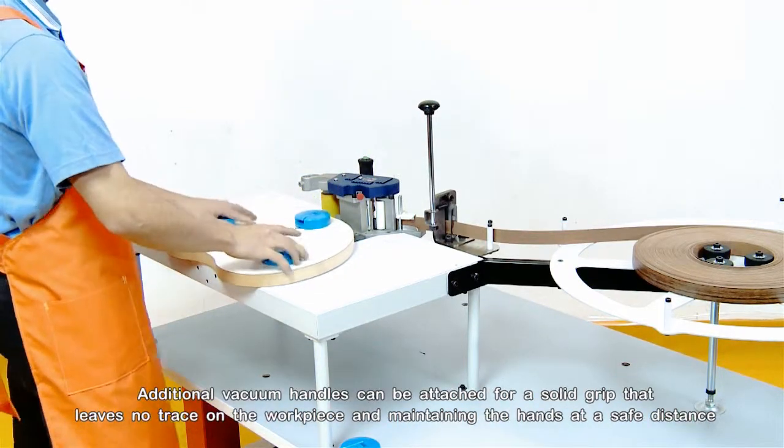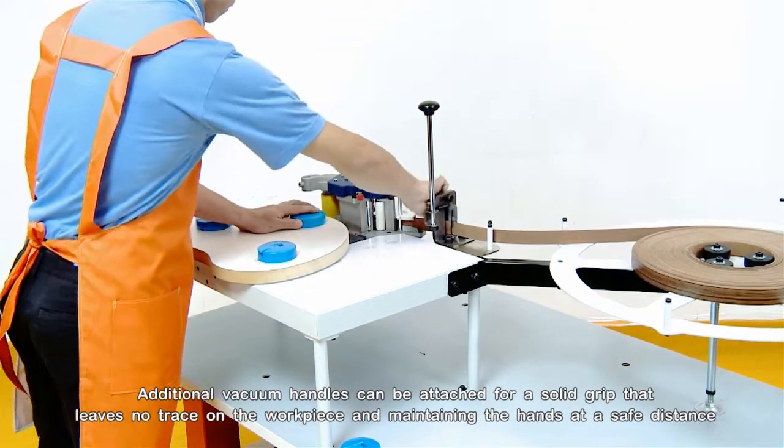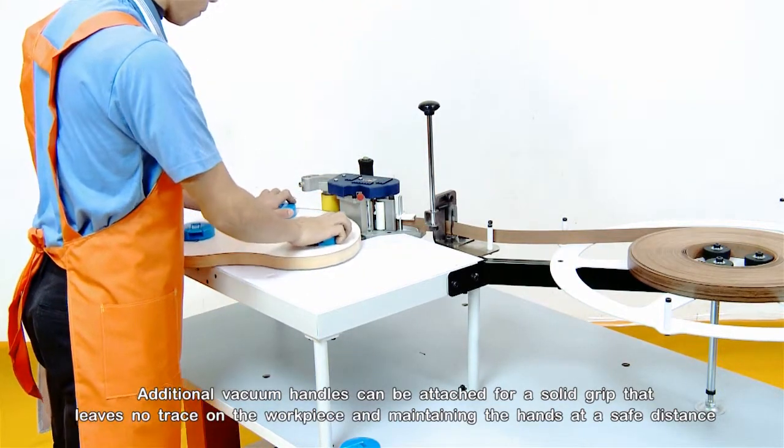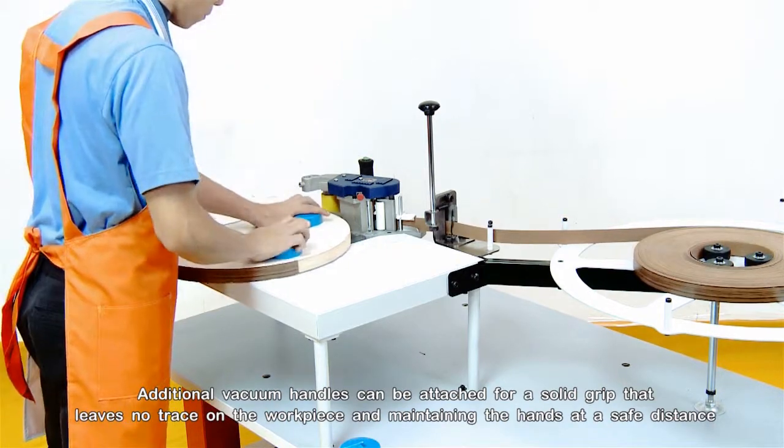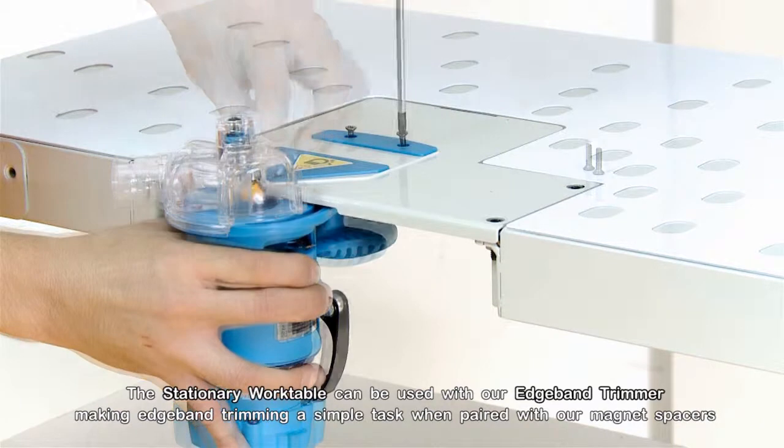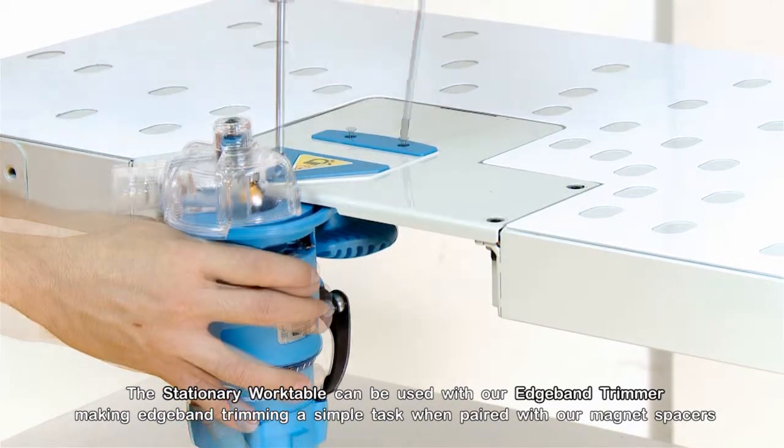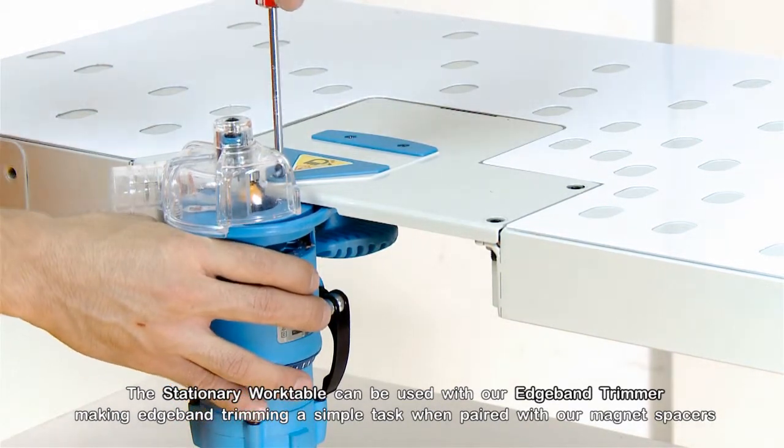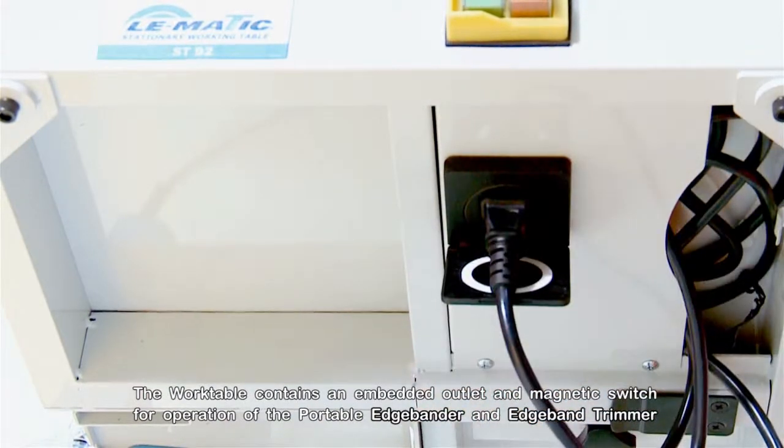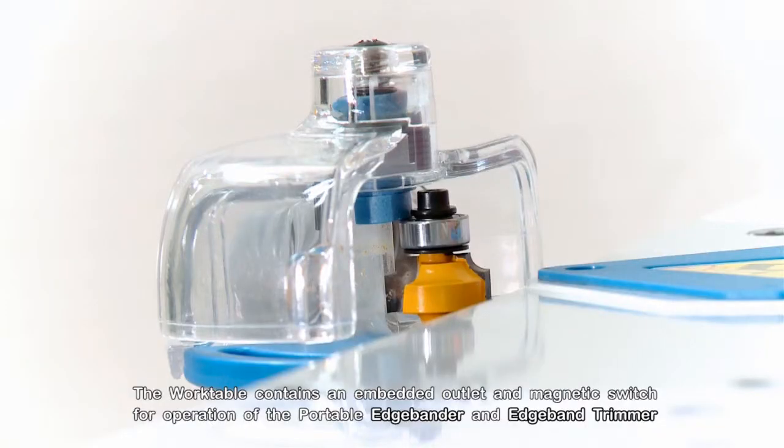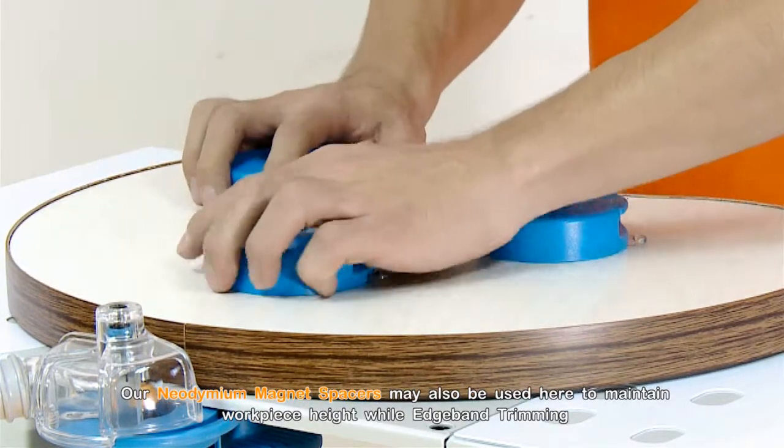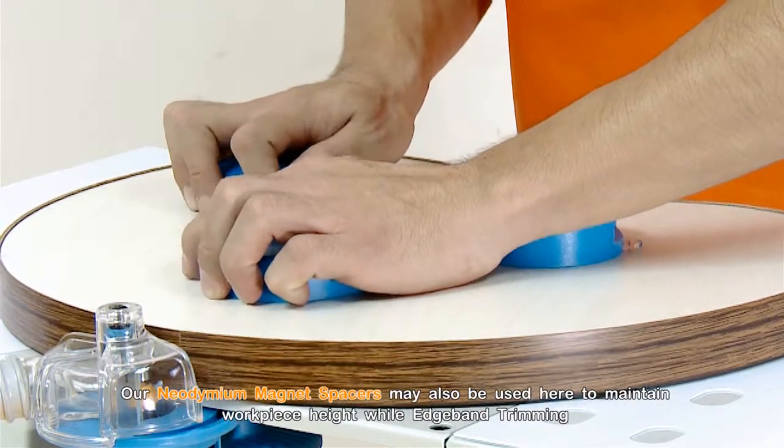Additional vacuum handles can be attached for a solid grip that leaves no trace on the workpiece while maintaining the hands at a safe distance. The stationary work table can be used with our edge band trimmer, making edge band trimming a simple task when paired with our magnet spacers. The work table contains an embedded outlet and magnetic switch for operation of the portable edge bander and edge band trimmer. Our neodymium magnet spacers may also be used here to maintain workpiece height while edge band trimming.